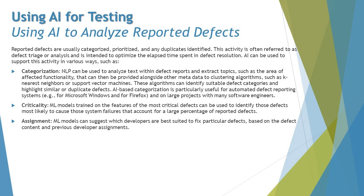For assignment, ML models can suggest which developers are best suited to fix particular defects based on the defect content and previous developer assignment history — much like recommendations from media players or music streaming portals. For example, if you repeat a song ten times, the system knows you love that genre and builds a playlist accordingly. Similarly, AI can determine based on past records what modules developers have worked on and easily allocate the right developer to a defect assignment.